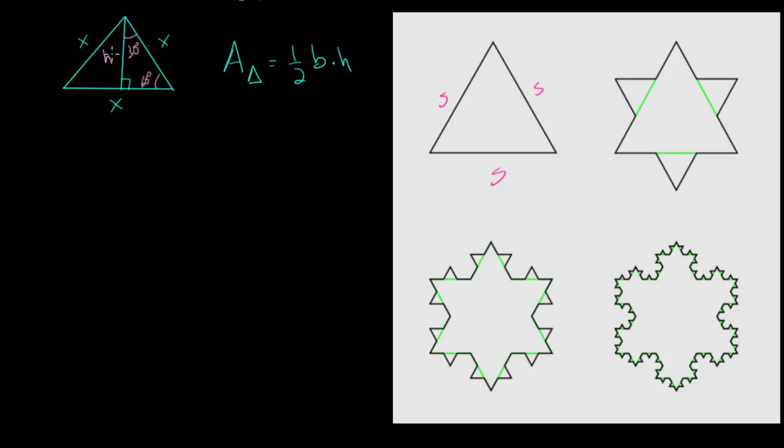You might remember that in a 30-60-90 triangle the smallest side is half of the hypotenuse, which makes this X over 2, and the height is the square root of 3 multiplied by the smallest side, which means in this general equilateral triangle the height is the square root of 3 multiplied by X over 2.